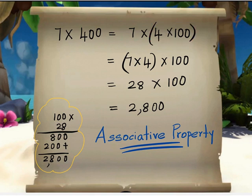The next step is to move the parenthesis from these two numbers to the first two numbers. So the parenthesis has to be moved to the first two numbers. So when we do that, it becomes 7 times 4 times 100.